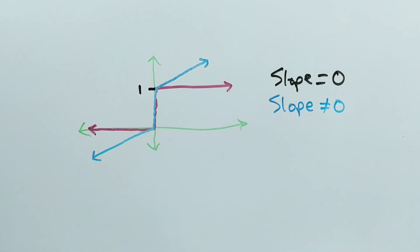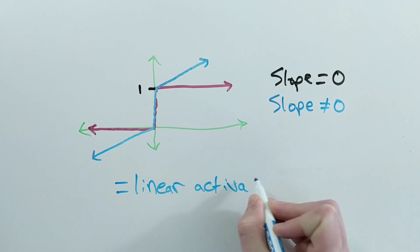However, it turns out that because this has the same slope the whole way through, except for right here at the jump at x equals 0, this is functionally equivalent to using a linear activation function. That is, if you use this activation function for your whole neural network, the output will be a linear combination of the inputs.